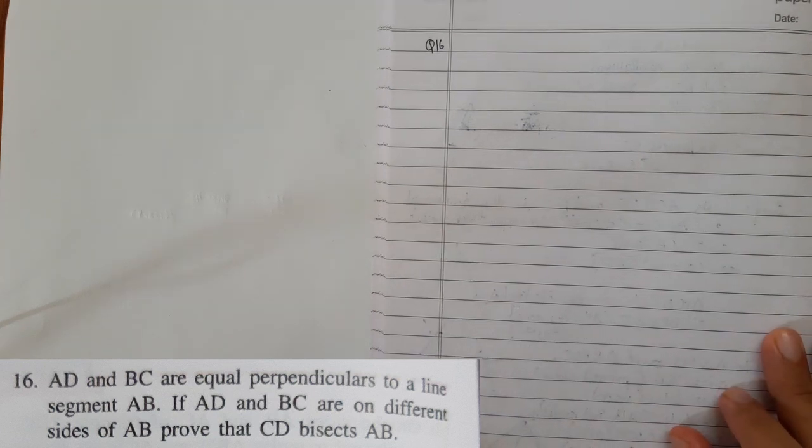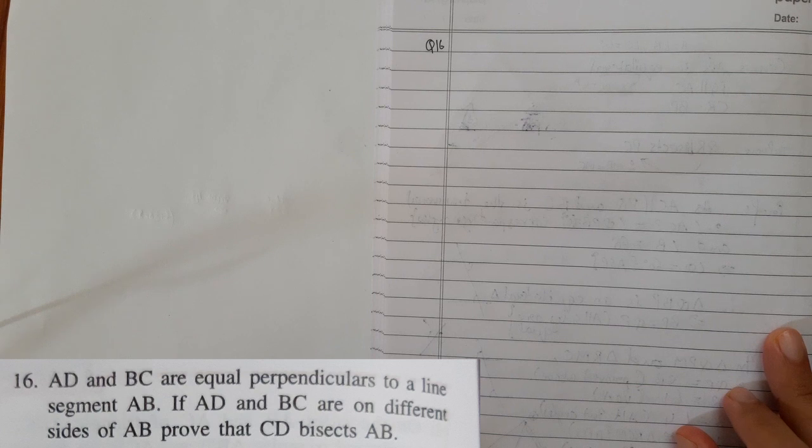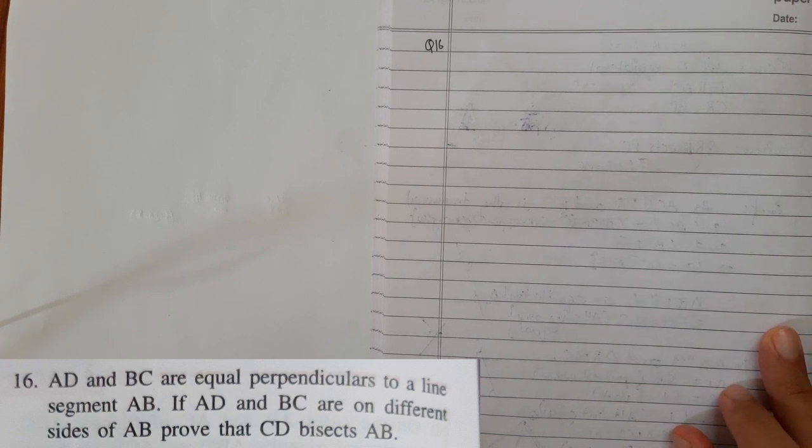In question number 16, AD and BC are equal perpendiculars drawn to the given line segment AB.